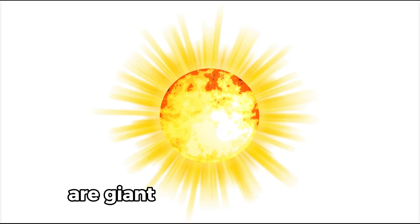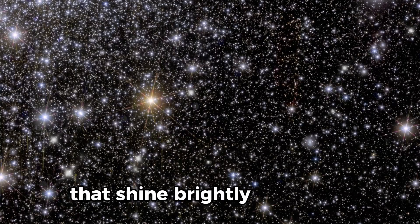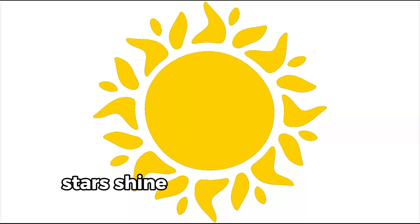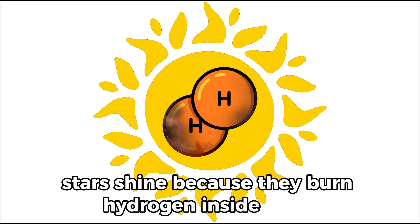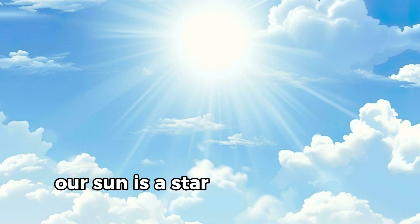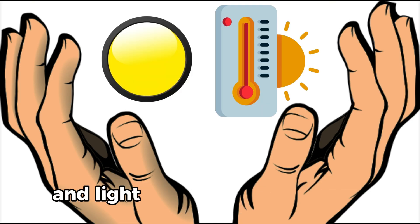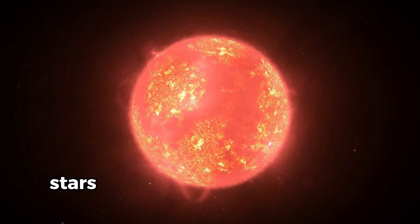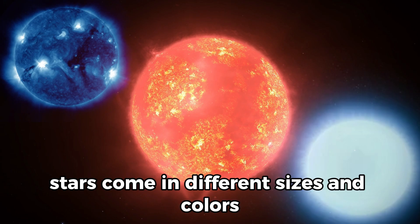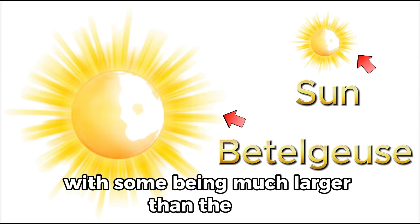Stars are giant balls of burning gas that shine brightly in the sky. Stars shine because they burn hydrogen inside them. Our sun is a star, and it provides the heat and light that make life possible on Earth. Stars come in different sizes and colors, with some being much larger than the sun.